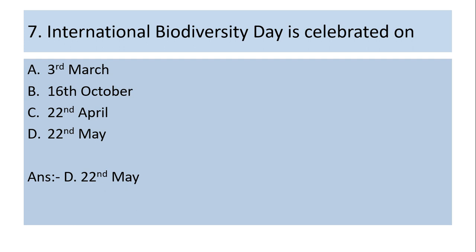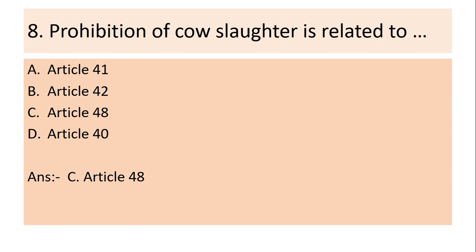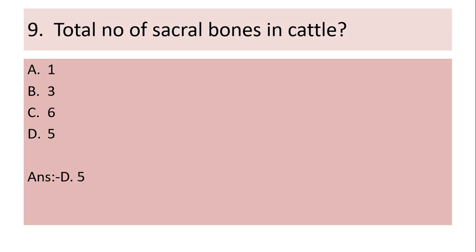Seventh question: International Biodiversity Day is celebrated on — (a) 3rd March, (b) 16th October, (c) 22nd April, (d) 22nd May. Answer is (d) 22nd May. Eighth question: Prohibition of cow slaughter is related to — (a) Article 41, (b) Article 42, (c) Article 48, (d) Article 40. Answer is (c) Article 48.